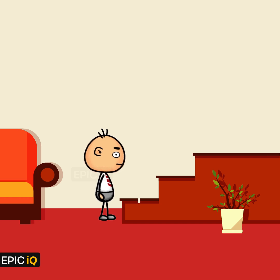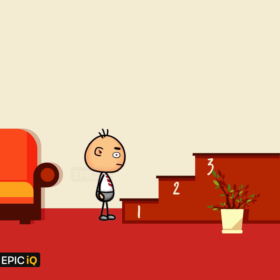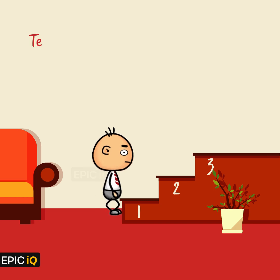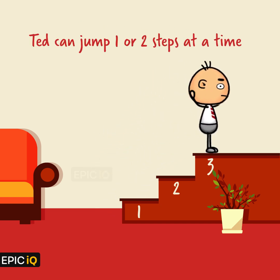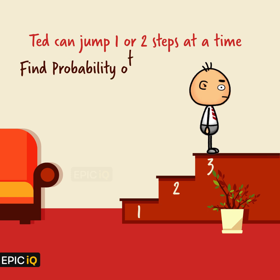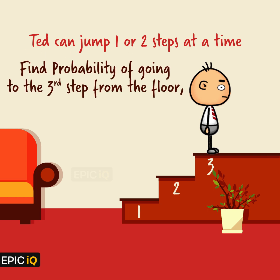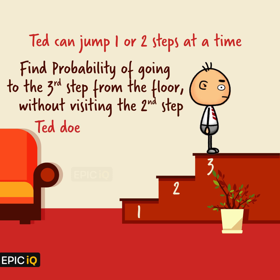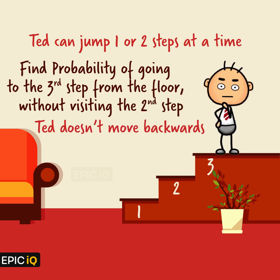There is a staircase with three steps, and little Ted is standing in front of it. Little Ted is big enough to jump either one step or two steps at a time. Can you find out the probability of going to the third step from the floor without visiting the second step? He doesn't move backwards.